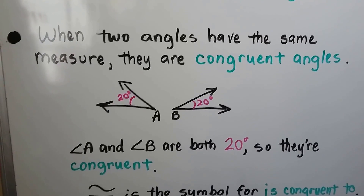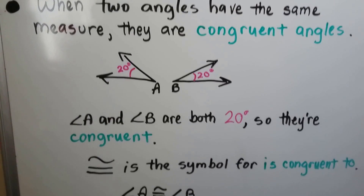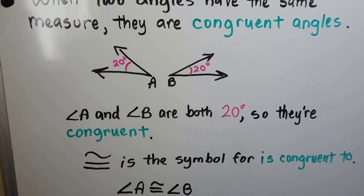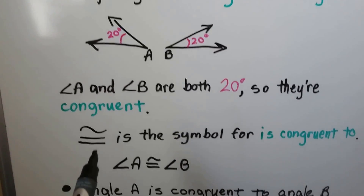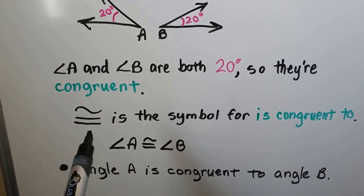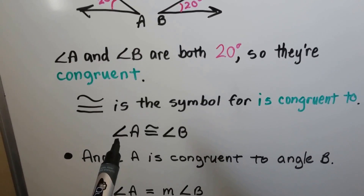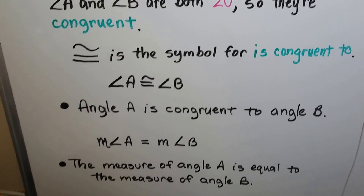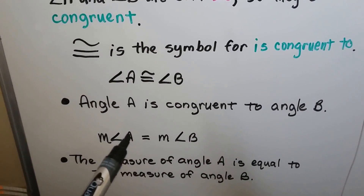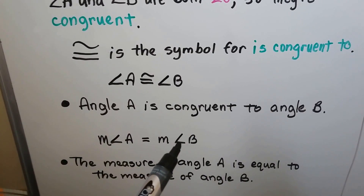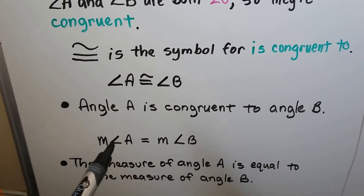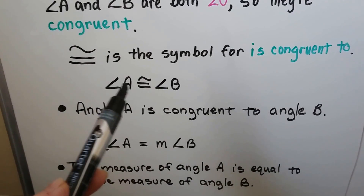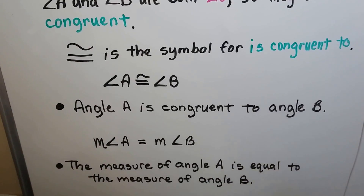When two angles have the same measure, they are congruent angles. Angle A is 20 degrees, angle B is 20 degrees — they're both 20 degrees, so they're congruent. We use this symbol for 'is congruent to' and write angle A is congruent to angle B. The measure of angle A equals the measure of angle B. With the little m in front, we don't need the congruent sign — we can use equal. If we just have angle A and angle B, then we put the congruent sign.